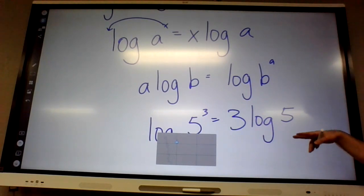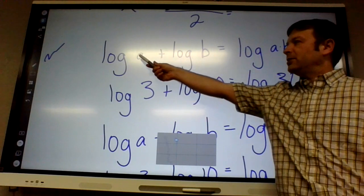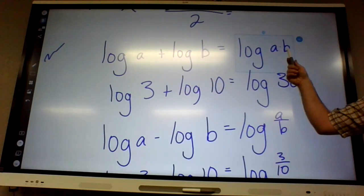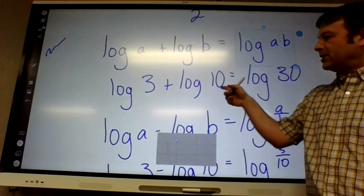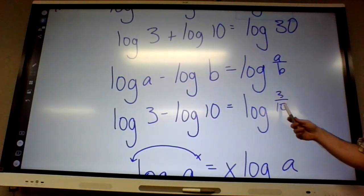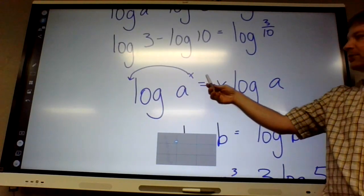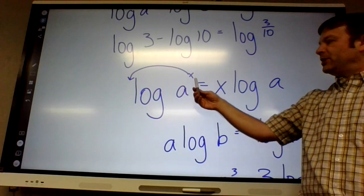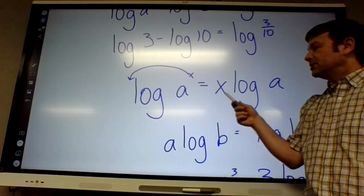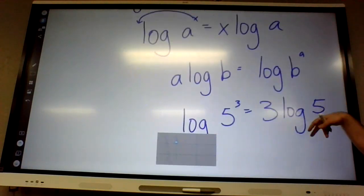All right, you guys got the three rules? Rule number one: if you're adding the logs, you can multiply the numbers. Rule number two: if you're subtracting the logs, you can divide the numbers. And rule number three: if there's an exponent on whatever you're putting in the log, you can move it in front as a multiplier, a factor.